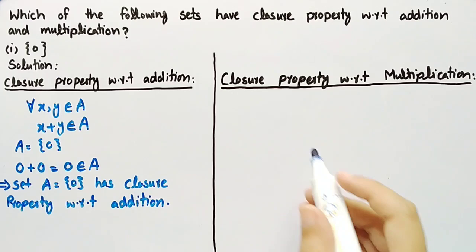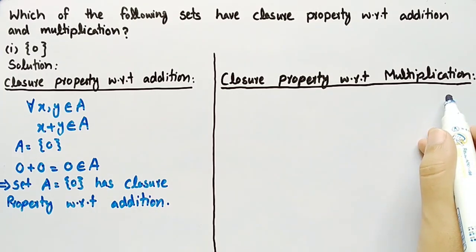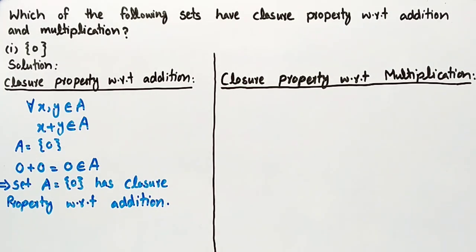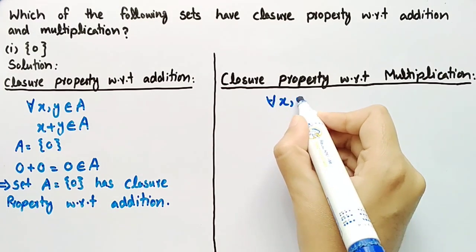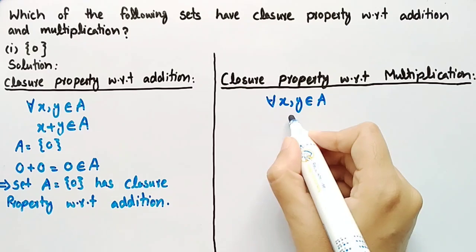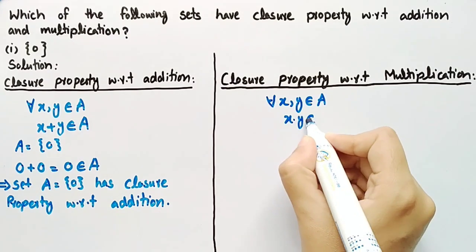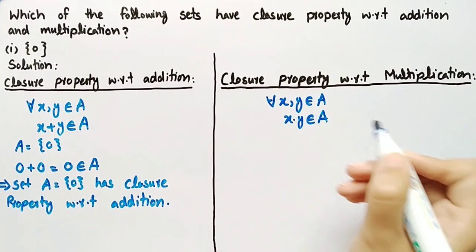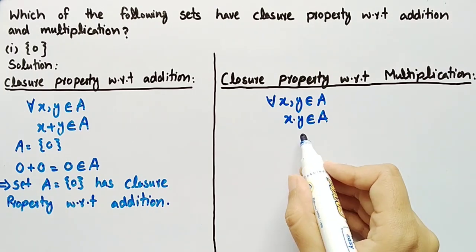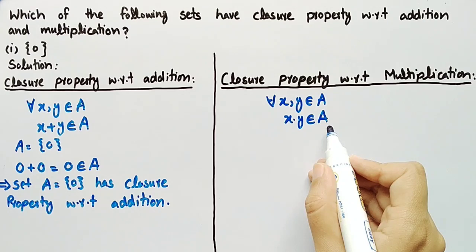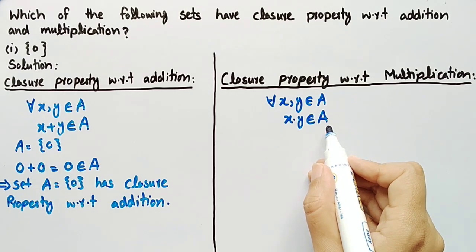Now we will check closure property with respect to multiplication. The definition of closure property with respect to multiplication is: for all x, y belonging to A, x dot y also belongs to set A. It means that for all elements x, y belonging to set A, their product must also belong to set A. Then we can say that closure property with respect to multiplication holds for set A.